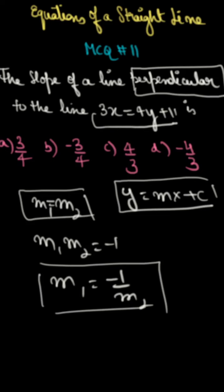So when you write it in general form, then it will be like this: y is equal to 3 by 4x minus 11 by 4. So here m is equal to 3 by 4.